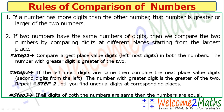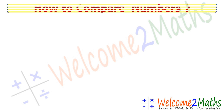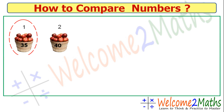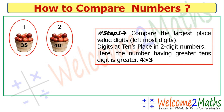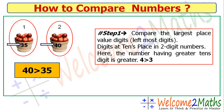Let's see the first example. There are 2 baskets — basket 1 has 35 apples and basket 2 has 40 apples. Which basket has more apples? Step 1: compare the tens place digits. Since both are two-digit numbers, we compare the tens digits. 4 is greater than 3, so 40 is greater than 35. We can also write 35 is less than 40.